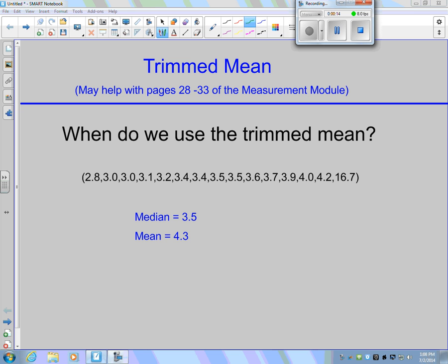Let's look at the data set listed here, the numbers ranging from 2.8 to 16.7. If we calculate the median and the mean of this data set, we'll see that the median works out to 3.5 and the mean to 4.3.